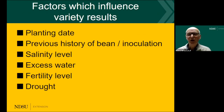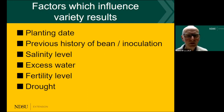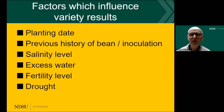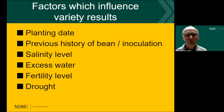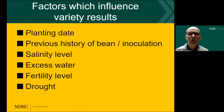In summary, the factors that influence variety trial results are planting date, previous field history of beans, inoculation, salt levels, excess water, fertility level, and drought. All of those influence how yields will perform under various conditions.